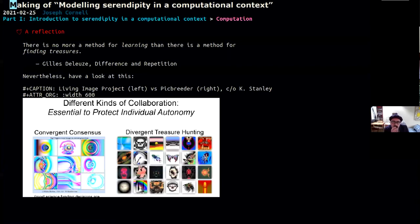Well, there's no more method for learning than there is a method for finding treasures, said Gilles Deleuze. But have a look at this diagram here, in which this is a slide from Professor Kenneth Stanley, who I quoted above. And here on the right he's got some images which were produced by something called divergent treasure hunting process. And on the left, something that was produced by what he called the convergent consensus process. They're both evolutionary processes with computers and humans in the loop. But his claim was the ones on the right look just much more interesting and structured and artistic and thought provoking.